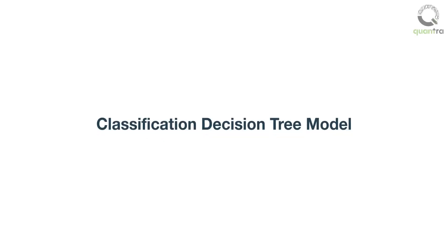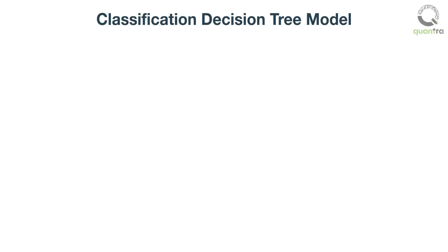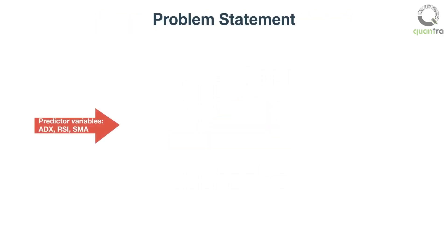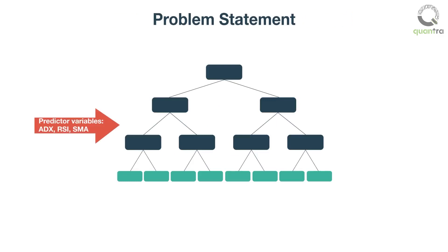In this section, we will code a classification decision tree model in Python. We will use the scikit-learn library, which is a comprehensive Python library for creating machine learning algorithms. The problem statement for our decision tree model is to predict the next day's trend of the daily returns of a stock.